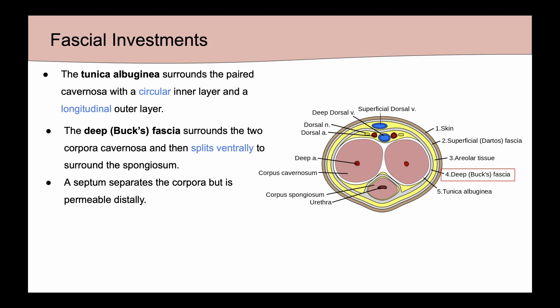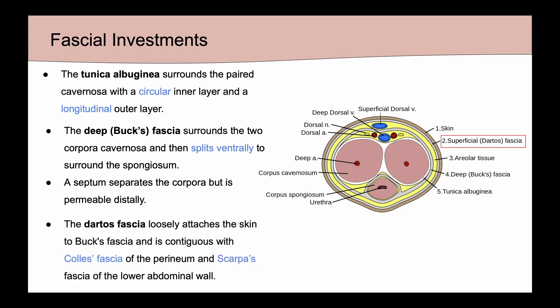Of note, even though there is a septum that separates the corpora, it's permeable distally, and so vascular space is shared between the two corpora. This means that physiologically and pharmacologically the corpora act as a single unit. Lastly, we have the dartos fascia, which loosely attaches the skin to Buck's fascia and is contiguous with Colles' fascia of the perineum and Scarpa's fascia of the lower abdominal wall.